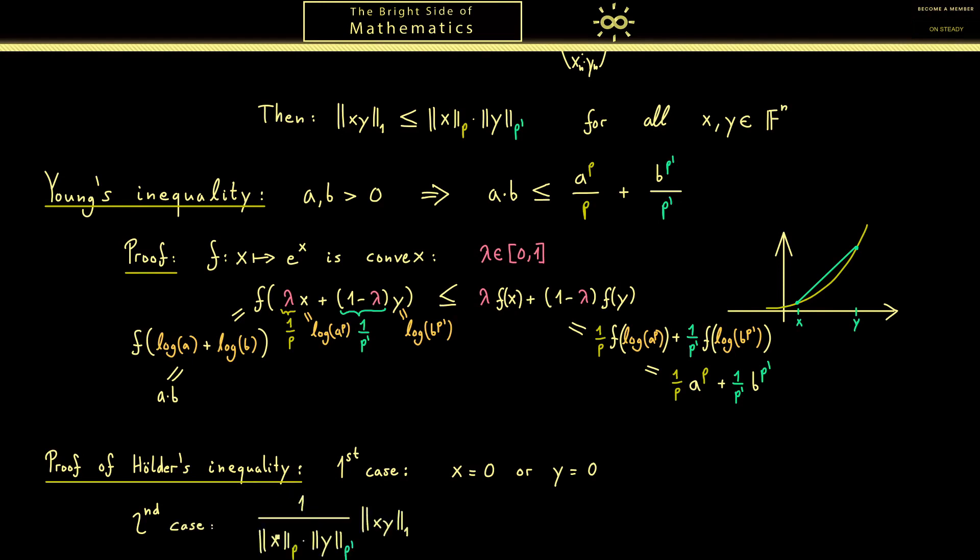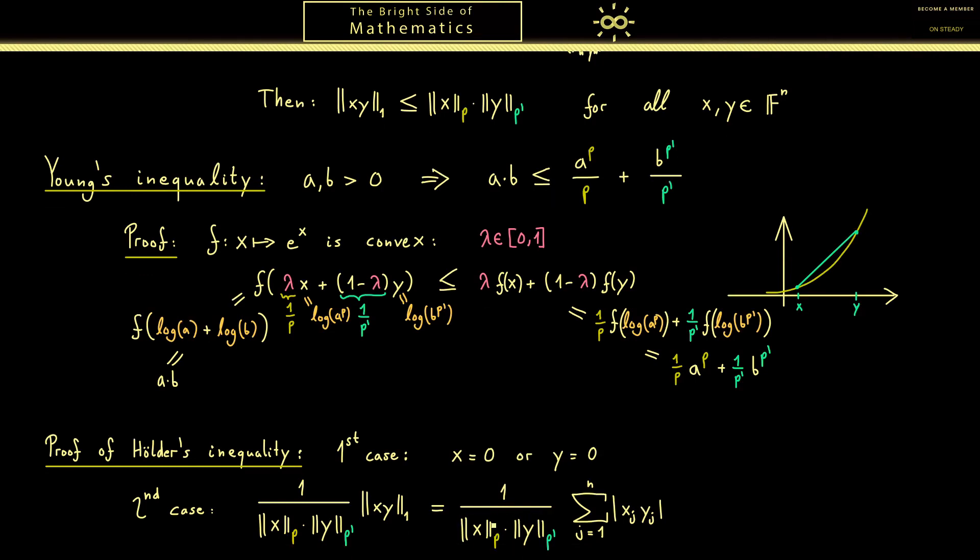Therefore for the second case we can divide and bring everything to the left hand side. Of course now we want to bring this inside the norm and divide x by its p norm and y by its p' norm. However, since I use this strange notation here, I bring in now the whole sum of the 1 norm. Here we have it, and we can pull in the norm into the sum and then into the absolute value.